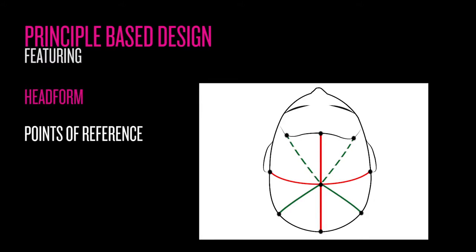The more we understand about head form, the easier it is to make intelligent decisions about the haircut. The change in the direction of the head form influences the shape. Understanding these changes — or as we call them, points of reference — influences our decision to create a complementary shape.